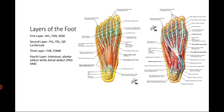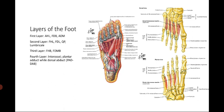The foot has four layers. The first layer consists of the abductor hallucis, flexor digitorum brevis, and abductor digiti minimi. The second layer includes the flexor hallucis longus, flexor digitorum longus, quadratus plantae, and lumbrical muscles. The third layer has the flexor hallucis brevis and flexor digiti minimi brevis. The fourth layer contains the interossei muscles — the mnemonic PAD-DAB: plantar interossei perform adduction while dorsal interossei perform abduction of the digits.